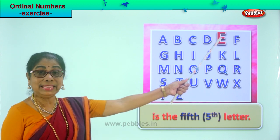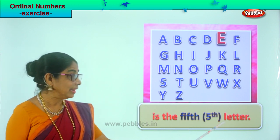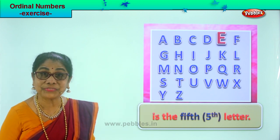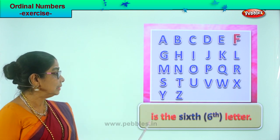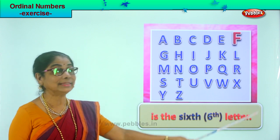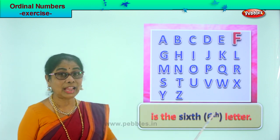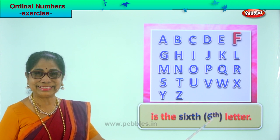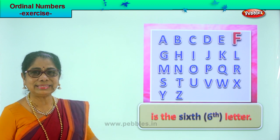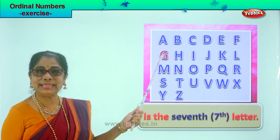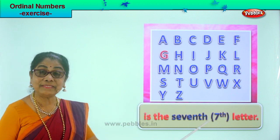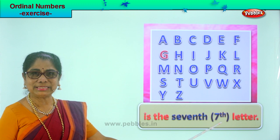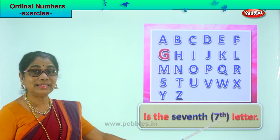Let's take the next letter — E. E is the fifth letter. The spelling is 'fifth,' and the representation is five and TH. Next is letter F. F is the sixth letter. See how you write 'sixth' — the representation is six and TH. Then G is the seventh letter — seven and TH.